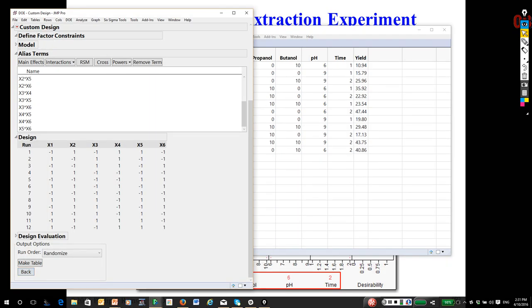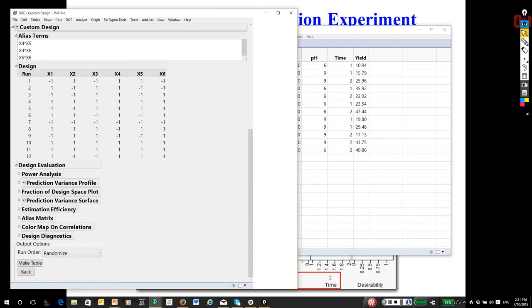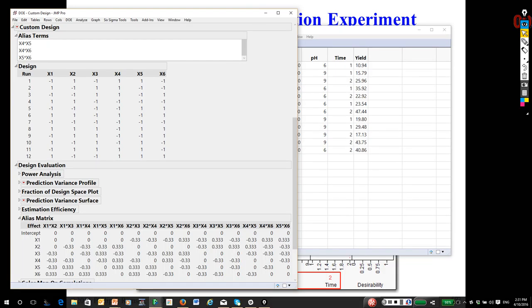Okay. So when I create it, you have Design Evaluation, and one of these options is the alias matrix. So as I said, you can come in here and see that the aliasing is one-third for each of the main effects if they are partially aliased with a two-way interaction not in the model.